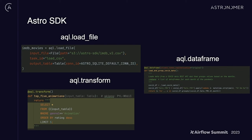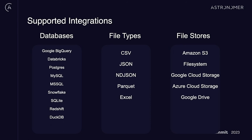aql.loadfile — you give it a file path and a table, and it will load data from most major local data stores into a data warehouse like Snowflake, BigQuery, or Redshift. aql.transform — you pass in a SQL function and it will auto-generate a table based on that query. aql.dataframe allows you to take any SQL table or Python data frame, pass it into the function as an XCOM input, and it will automatically convert that into a data frame. There's a pretty wide array of common databases, file types, and file stores that work with this library.